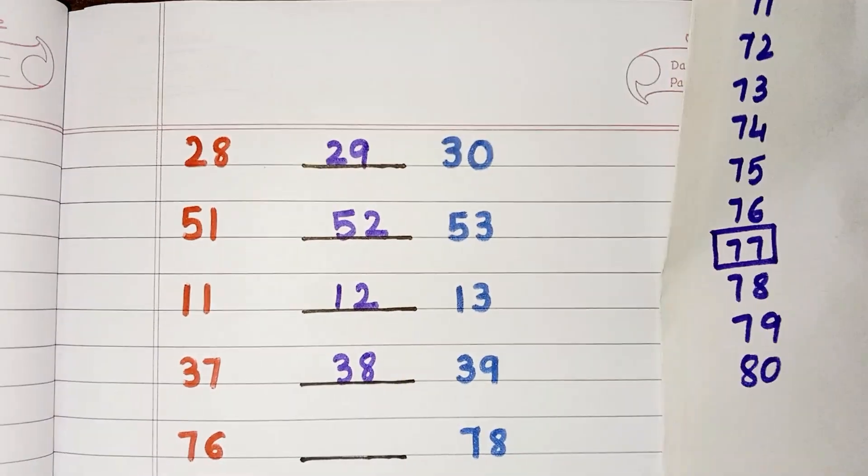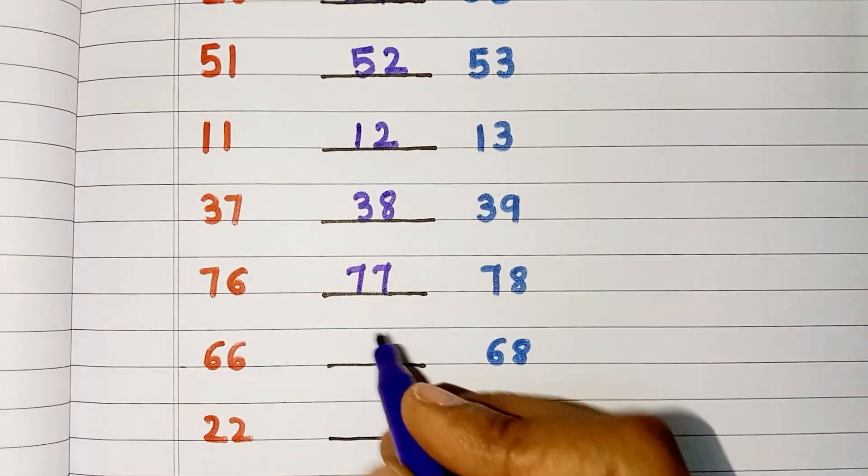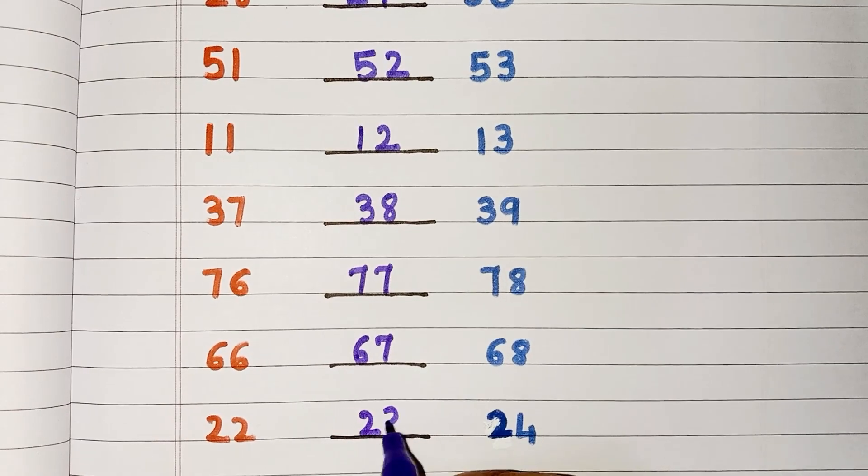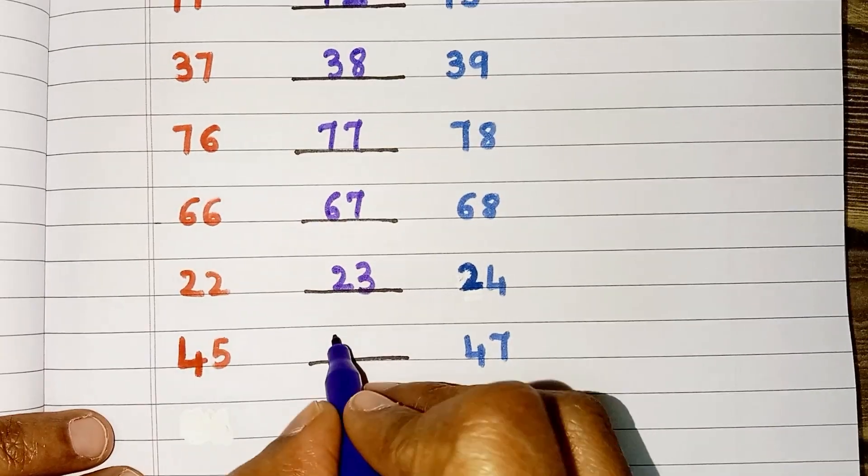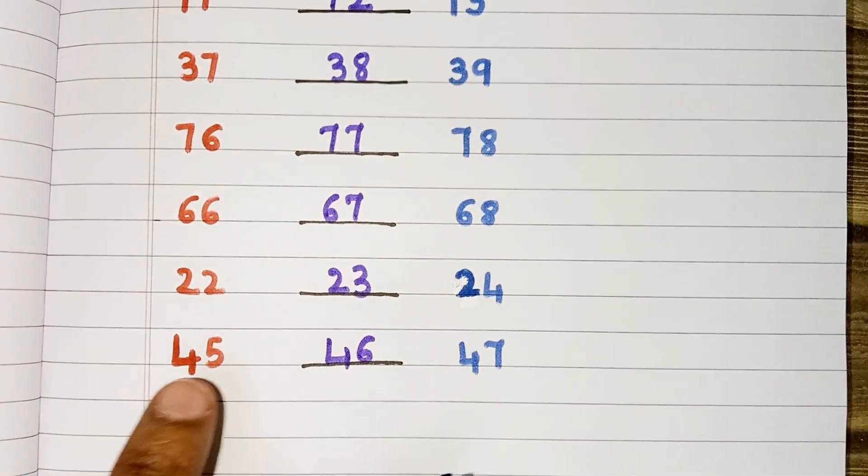So, what comes between 76 and 78? It is 77. 67 comes between 66 and 68. 23 comes between 22 and 24. 46 comes between 45 and 47.